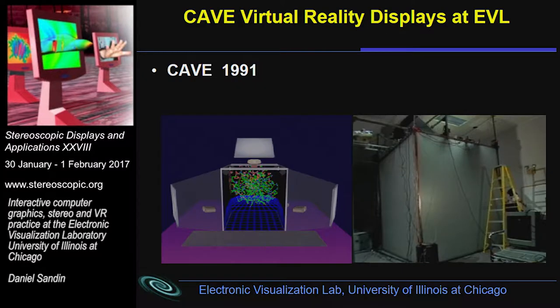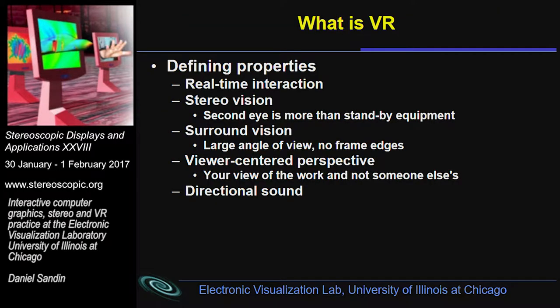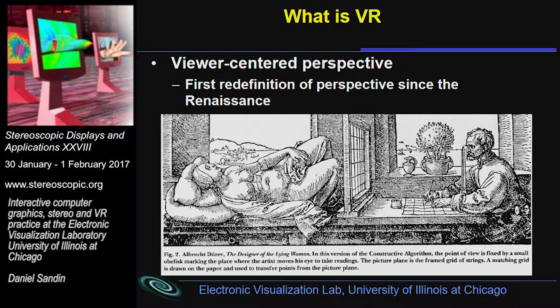In 1991, we invented and developed the CAVE for students and faculty at EVL. This is, of course, a full surround system VR. To define what I mean by VR: it's real-time interaction, stereo vision, surround vision, and viewer-centered perspective — the head-tracking component so that you get your view of the world, not somebody else's — and sound, very important. To me, viewer-centered perspective is the center of the game. It's the first reinvention of perspective since the Renaissance — normal perspective is good from only one point of view, and as a practical matter, you're never there.